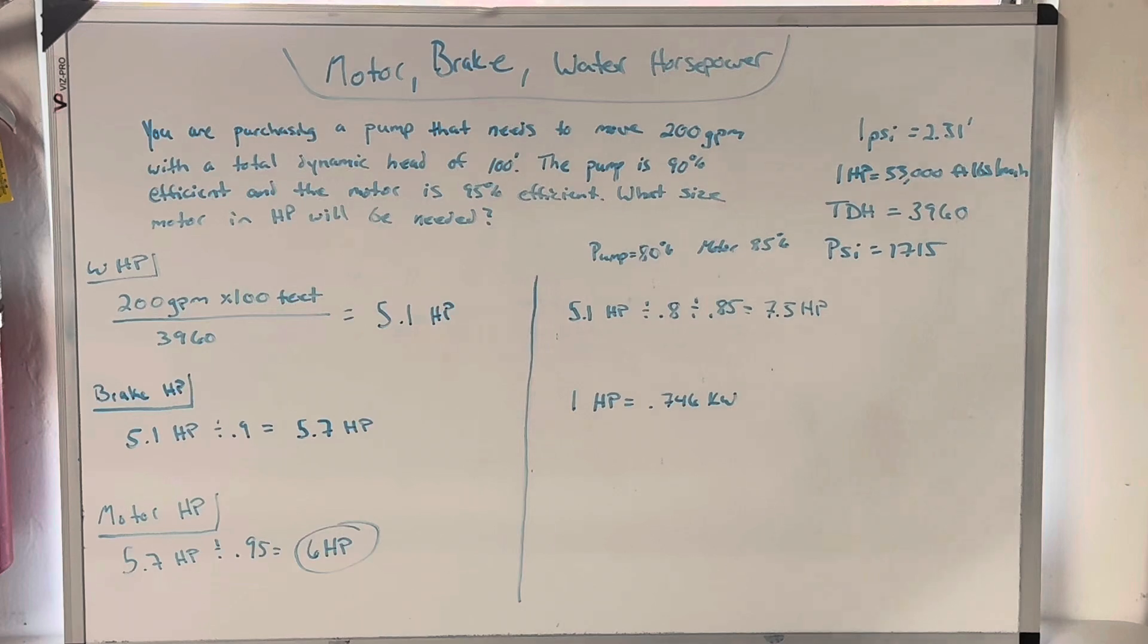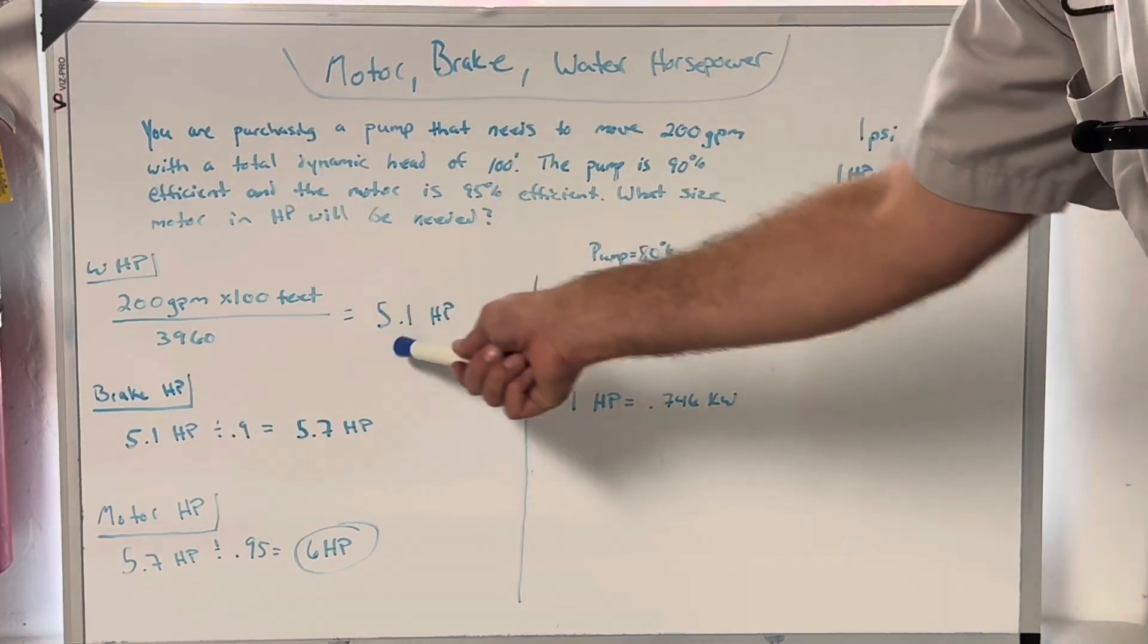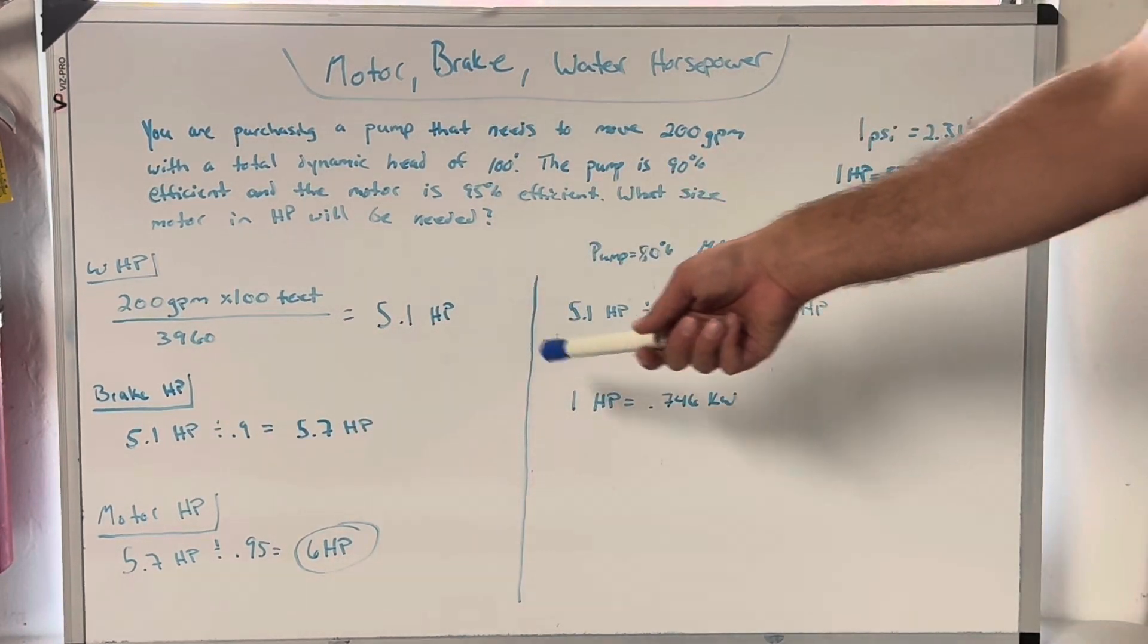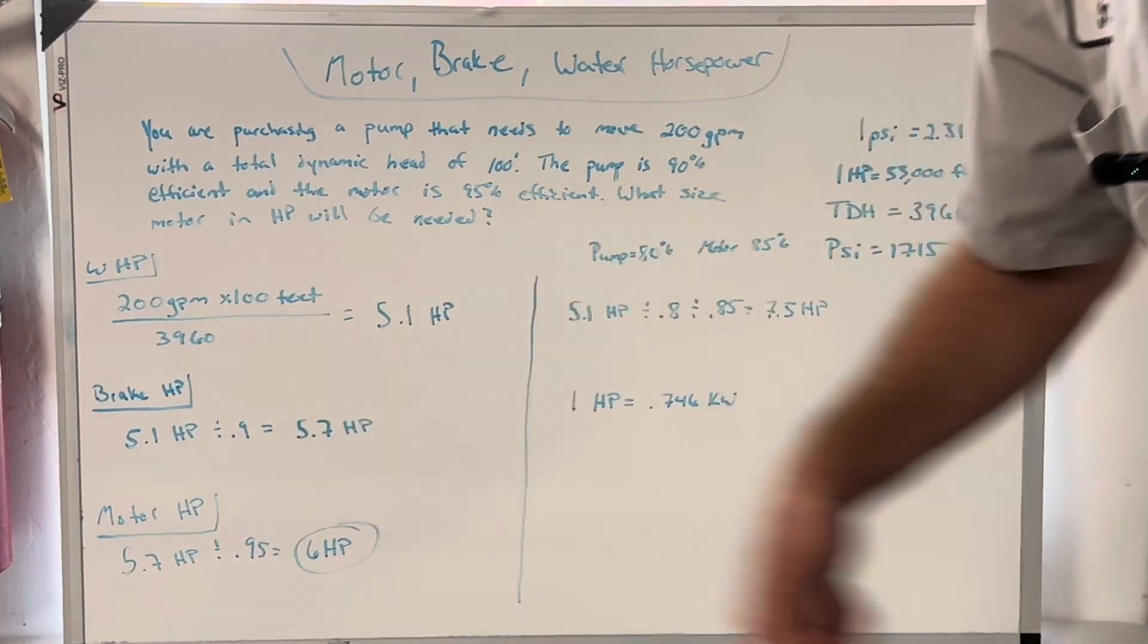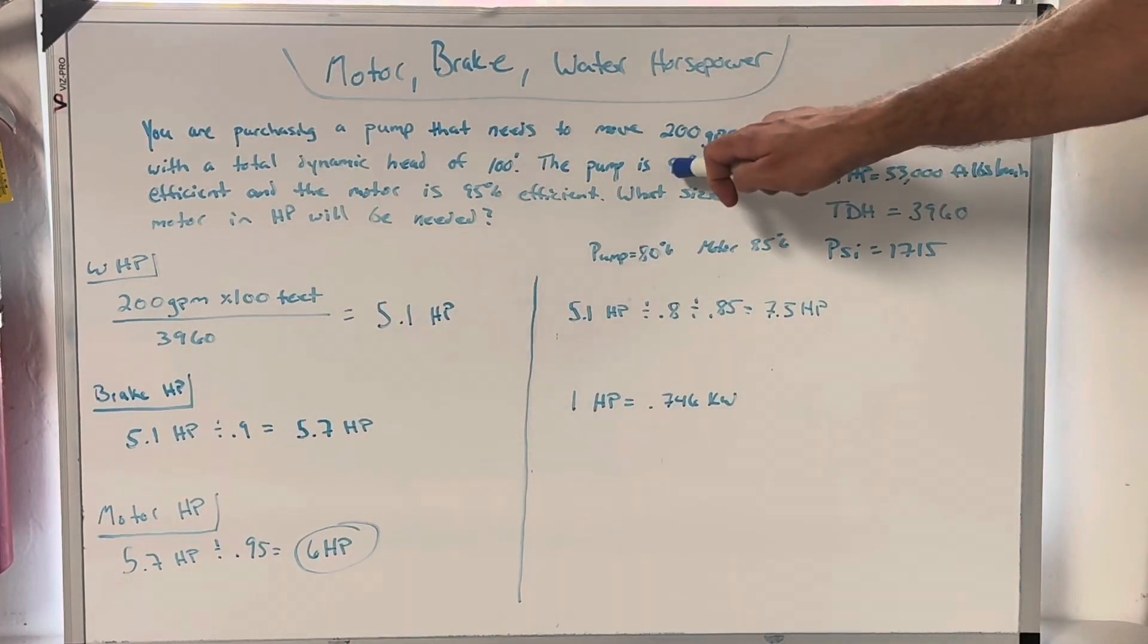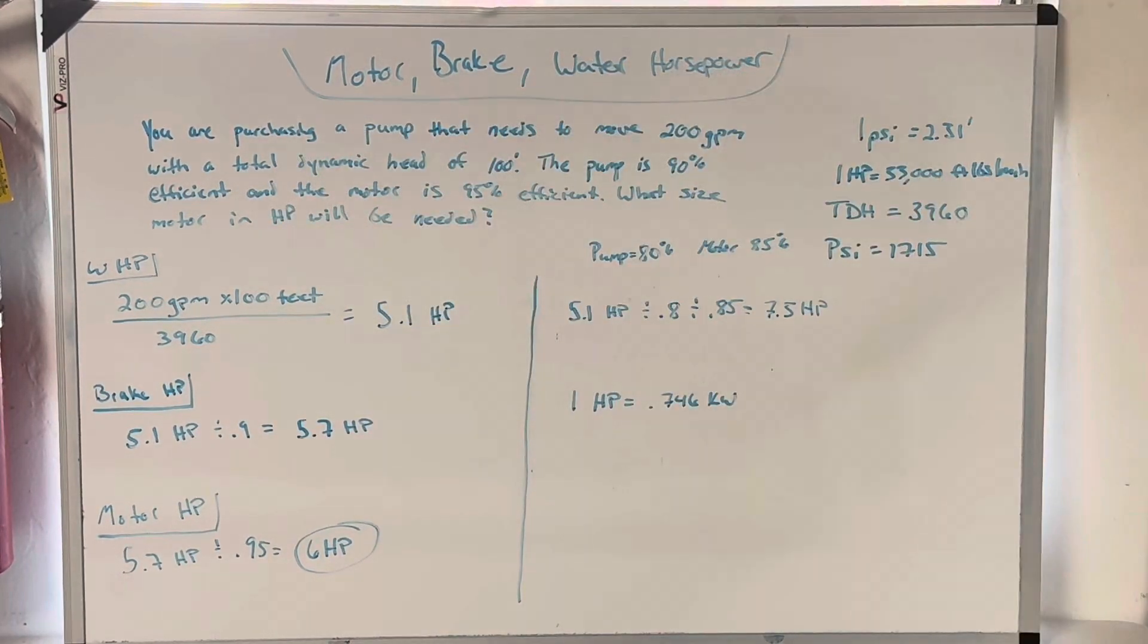So now I'm going to figure out brake horsepower, which is 5.1. It's 5.05, but I rounded to 5.1. 5.1 horsepower divided by 0.9, 90%. The pump is 90% efficient. Gives me 5.7 horsepower as my brake horsepower.